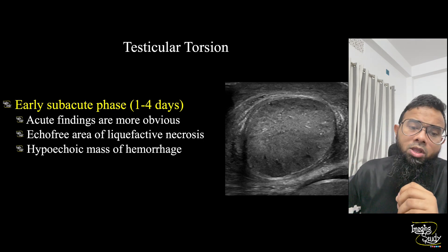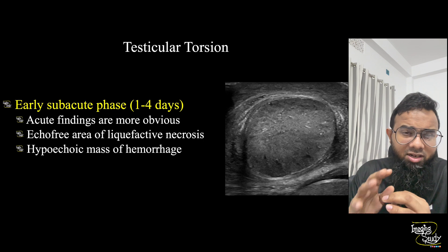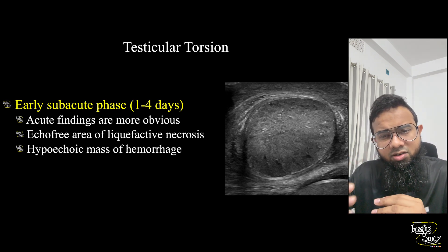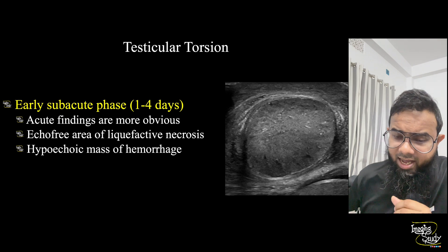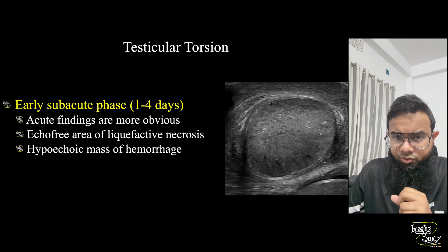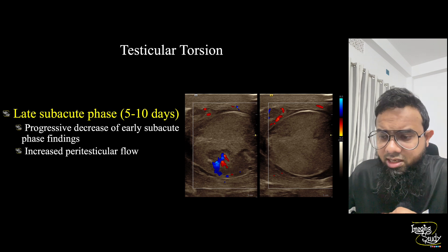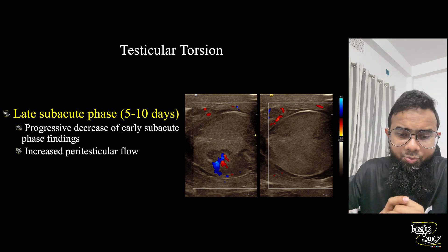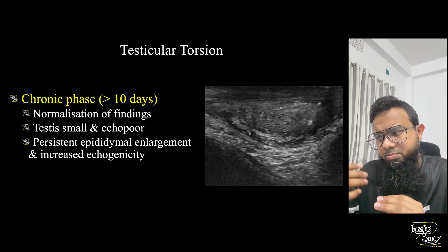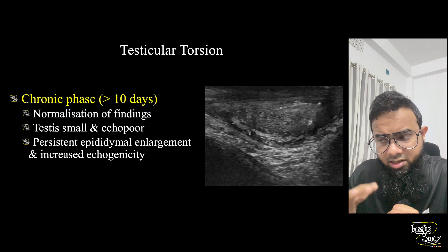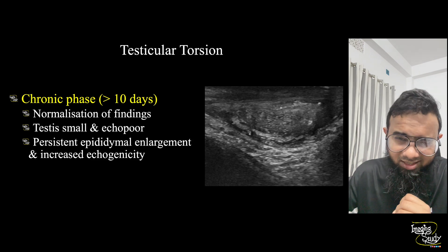In early subacute stage you will see necrotic spaces — tiny cystic spaces. If the patient comes on the first day, the cystic spaces are quite difficult to see; by the third or fourth day they become very prominent. In late subacute stage the features are similar but you will see some prominent peritesticular flows. In the chronic stage you see features like chronic epididymal orchitis; on color Doppler you may see some collateral flows from cremasteric arteries attempting to supply the testes, but it is already dead.